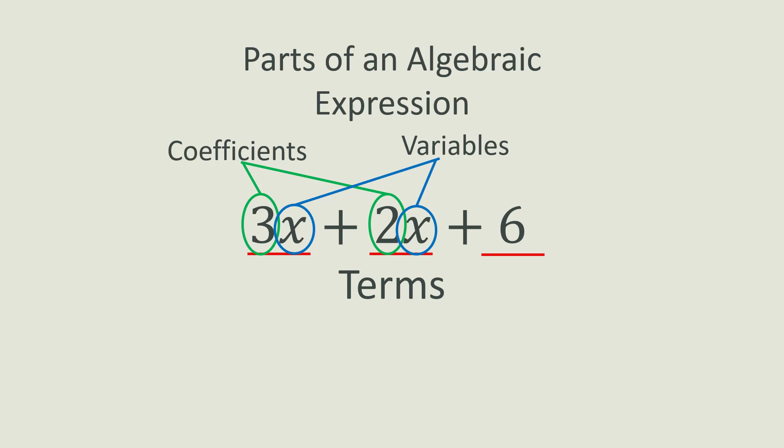The letters being multiplied by the coefficients are called variables. Variables are values that are unknown, so they are shown using letters. Since 6 isn't an unknown value and isn't multiplied by a variable, it is neither a variable nor a coefficient. This means it can only be a constant, which is a term with only one value that isn't multiplied by anything else.